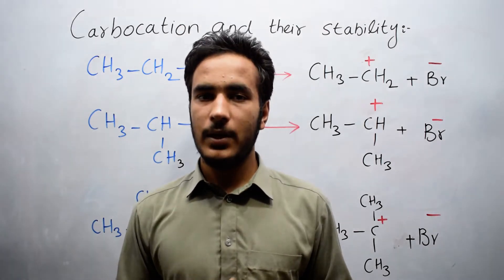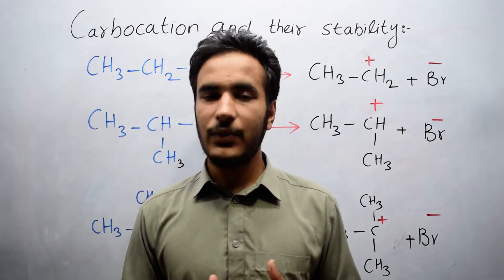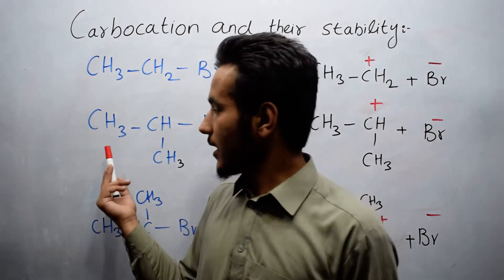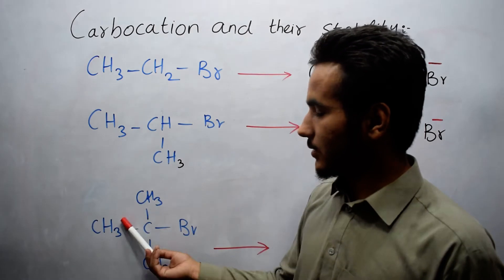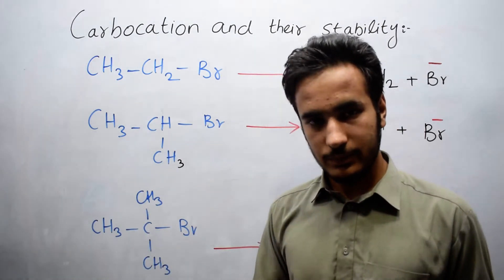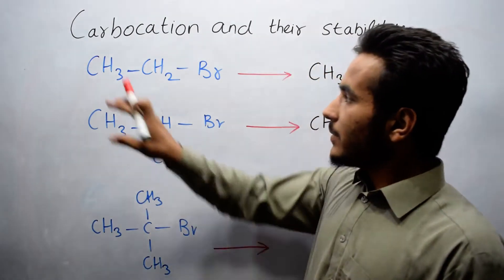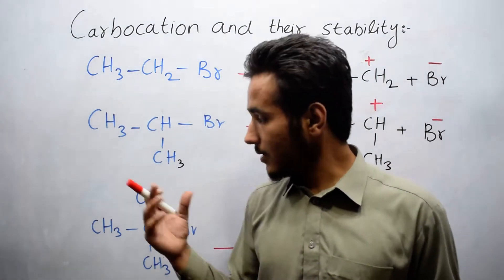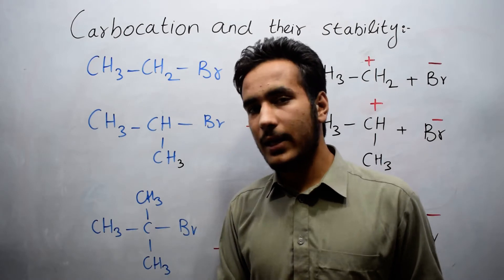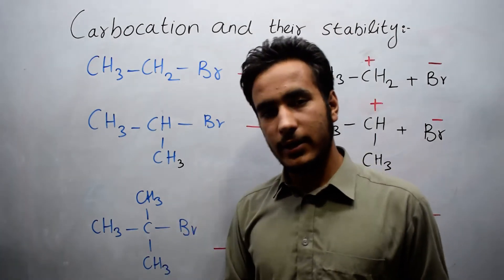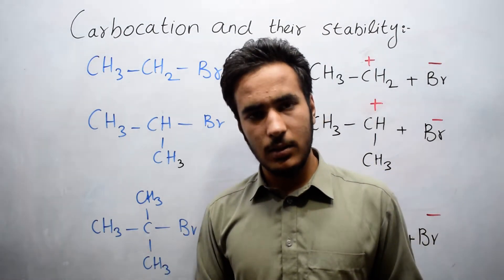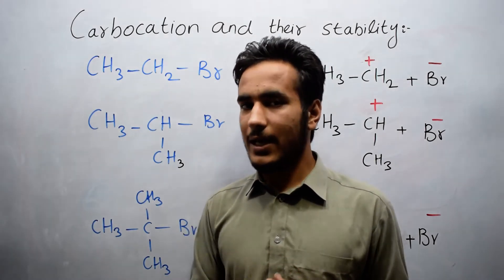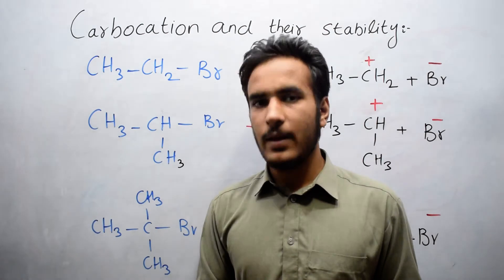We have three types of carbocations: the first is a primary carbocation, the second is a secondary carbocation, and the third is a tertiary carbocation. Primary carbocation is formed from a primary alkyl halide, secondary from a secondary alkyl halide, and tertiary from a tertiary alkyl halide.